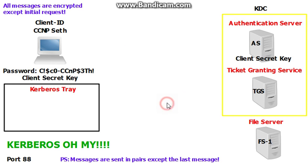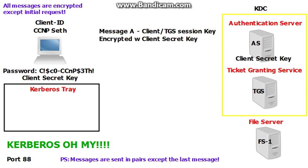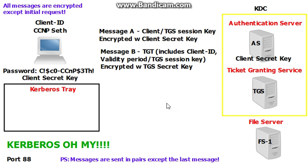That was step one. After step one is complete, the authentication server sends two messages to the client: message A and message B. The authentication server sends over a client TGS session key — the ticket granting service — encrypted with the newly made client secret key, and a TGT, a ticket granting ticket, encrypted with the TGS secret key. Only the TGS can decrypt this ticket granting ticket — it's made for the TGS to identify the client — but the client keeps a copy of it in his Kerberos tray.